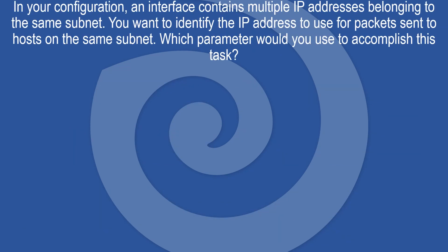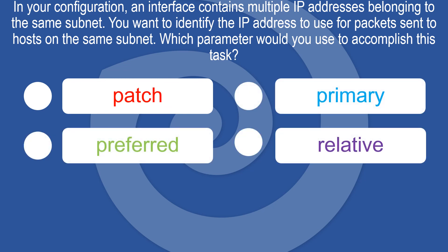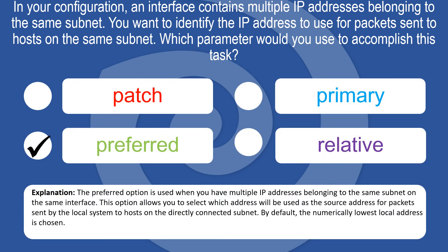In your configuration, an interface contains multiple IP addresses belonging to the same subnet. You want to identify the IP address to use for packets sent to hosts on the same subnet. Which parameter would you use? Options: Patch, Primary, Preferred, Relative. The preferred option is used when you have multiple IP addresses on the same subnet on the same interface, selecting which address is used as the source for packets sent to directly connected hosts. By default, the numerically lowest local address is chosen.